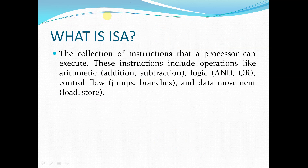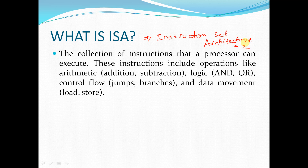ISA stands for instruction set architecture. It is the collection of instructions that a processor can execute. These instructions include operations like arithmetic — addition, subtraction — logic — AND, OR — control flow — jumps, branches — and data movement — load and store. The ISA consists of all instructions available so we can tell the processor what to perform.